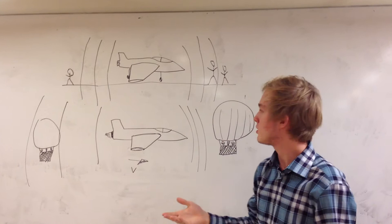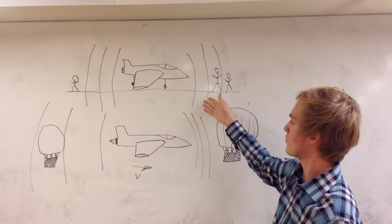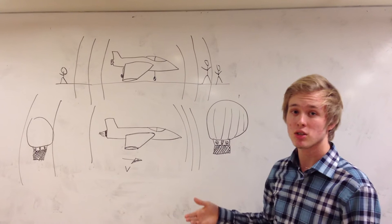These lines you can see represent the wavetops of the emitted sound. Since the plane is stationary, the wavetops will be of equal distance to each other, both in front of as well as behind the plane.